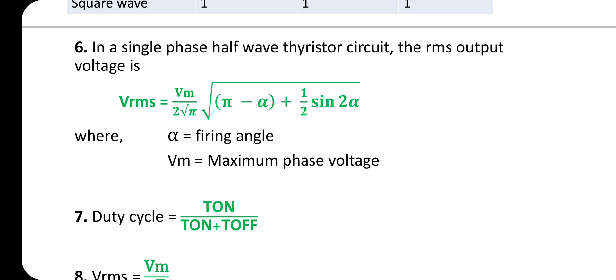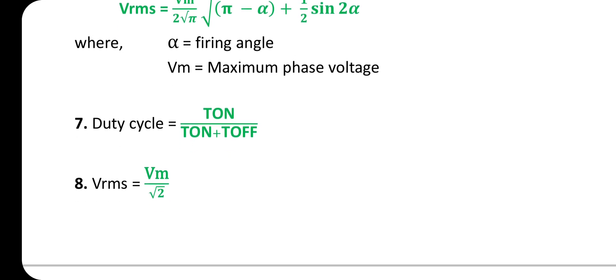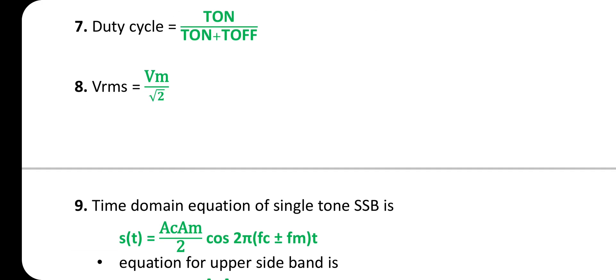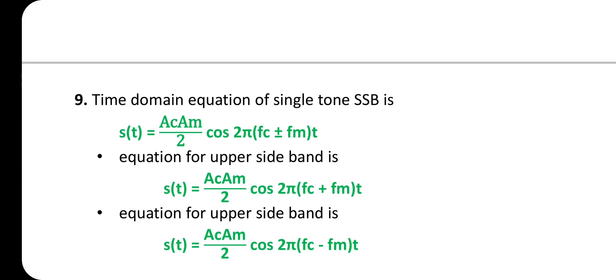To find the duty cycle, the equation is T_on divided by (T_on + T_off), and V_rms = V_m / √2. Substitute these equations whenever needed in questions.